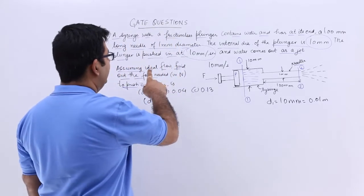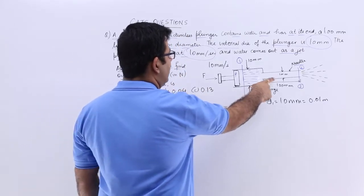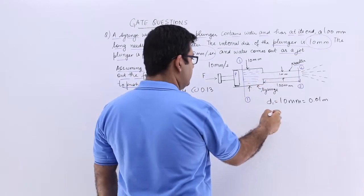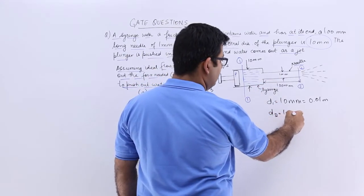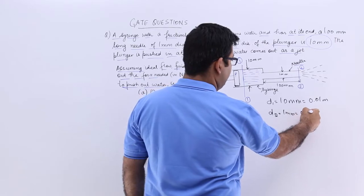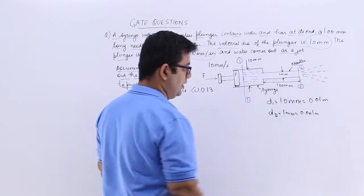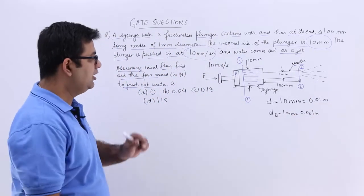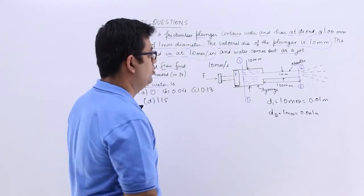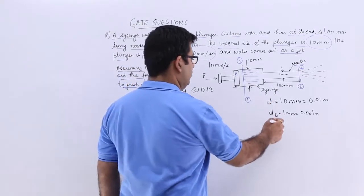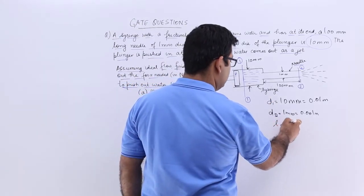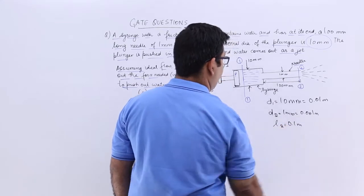What is the diameter of the needle which is 1 mm? So D2 is 1 mm which is 0.001 meters. The length of the needle is L2, I would say that is 100 mm which is 0.1 meters. So we are done with this.